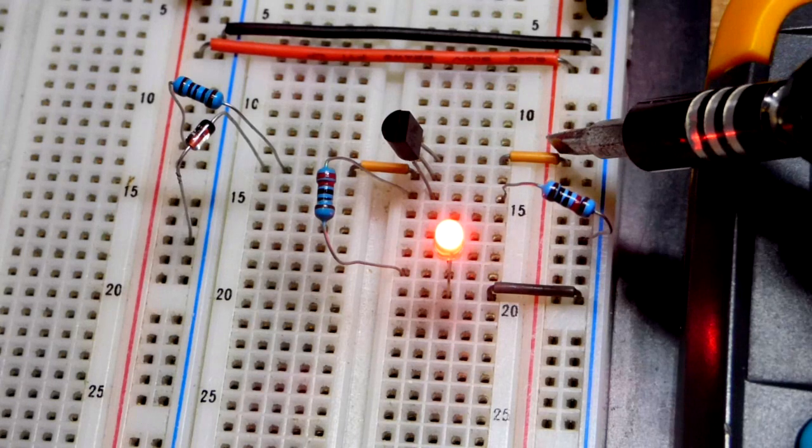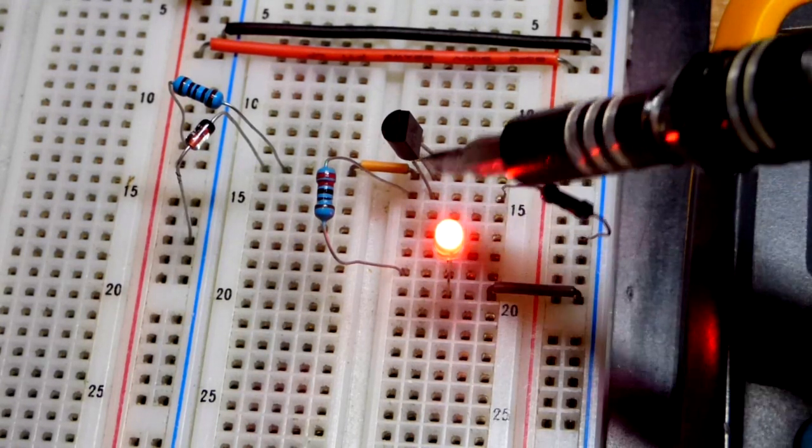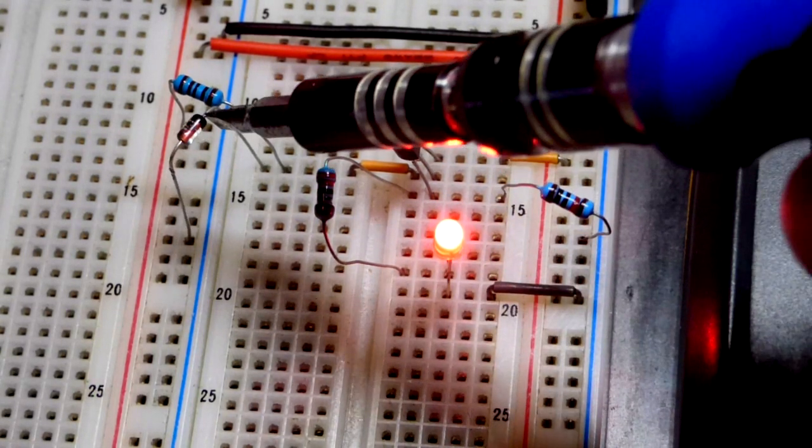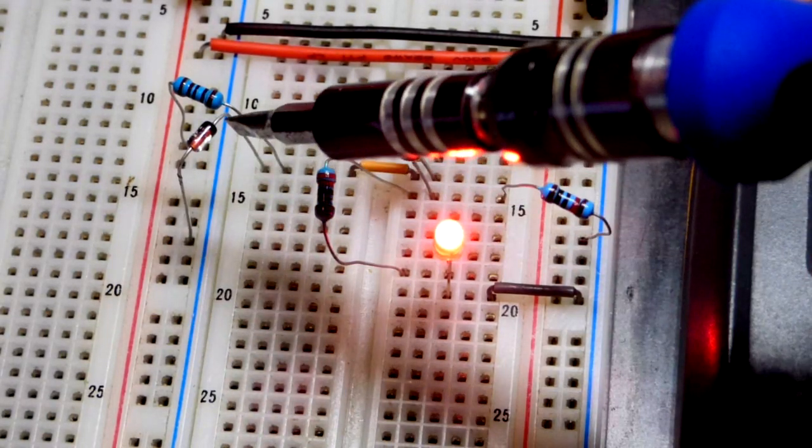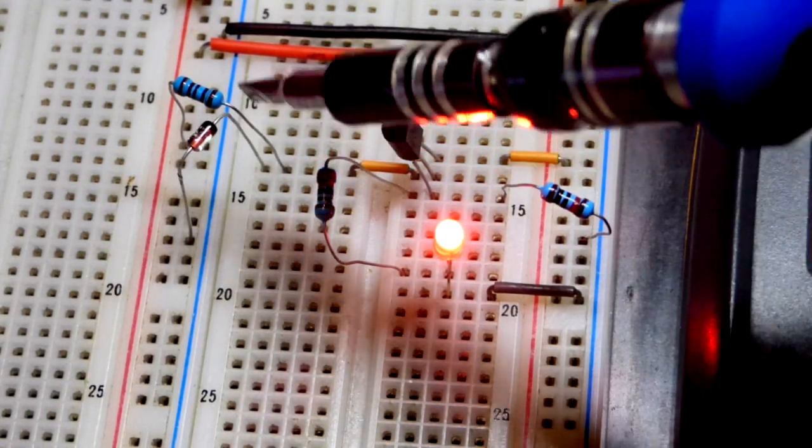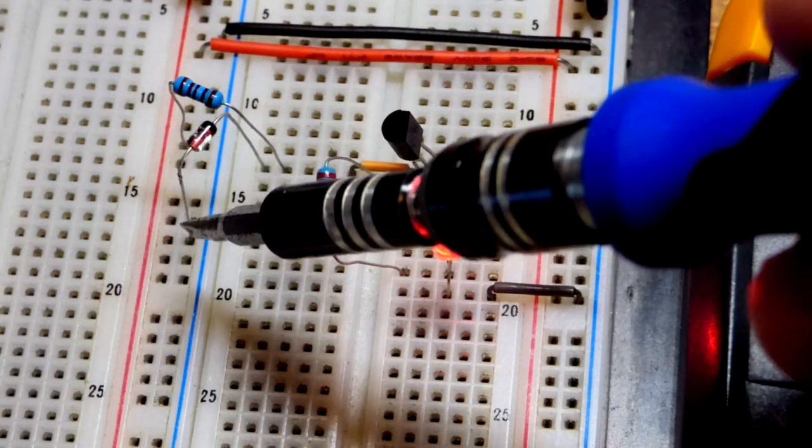So collector has to the positive supply, the base there, to the Zener diode. Now remember the Zener diode is reverse bias. I didn't mention that before. And so the cathode goes to positive supply, the anode towards the negative.